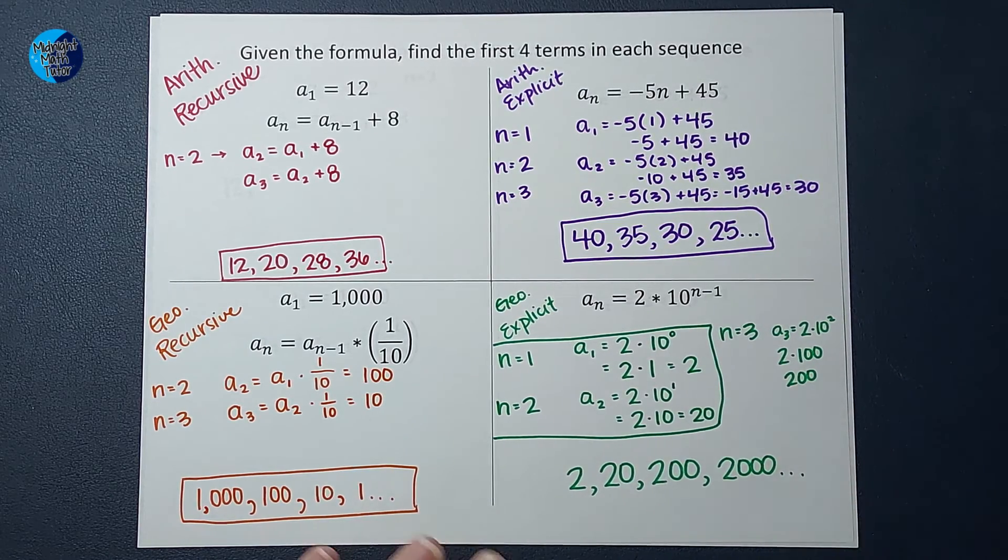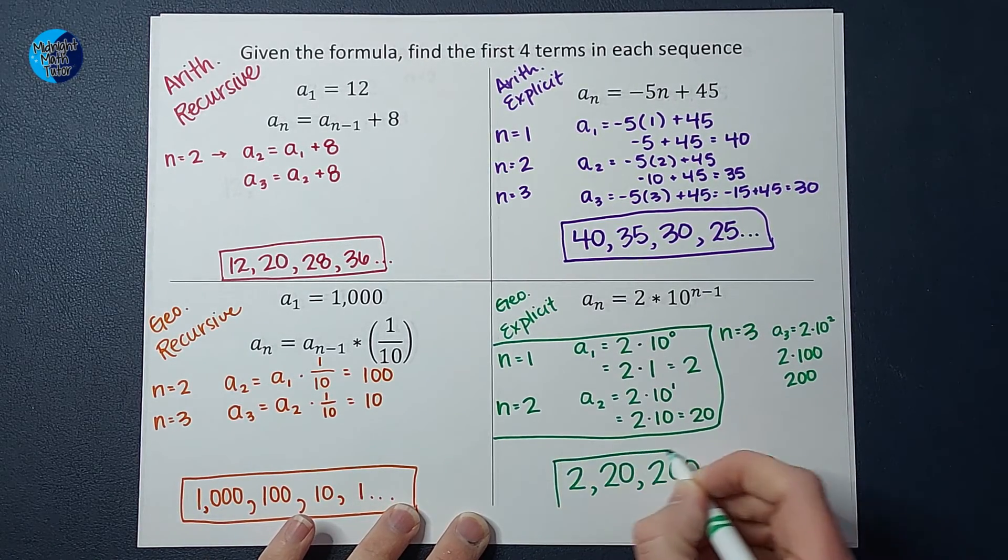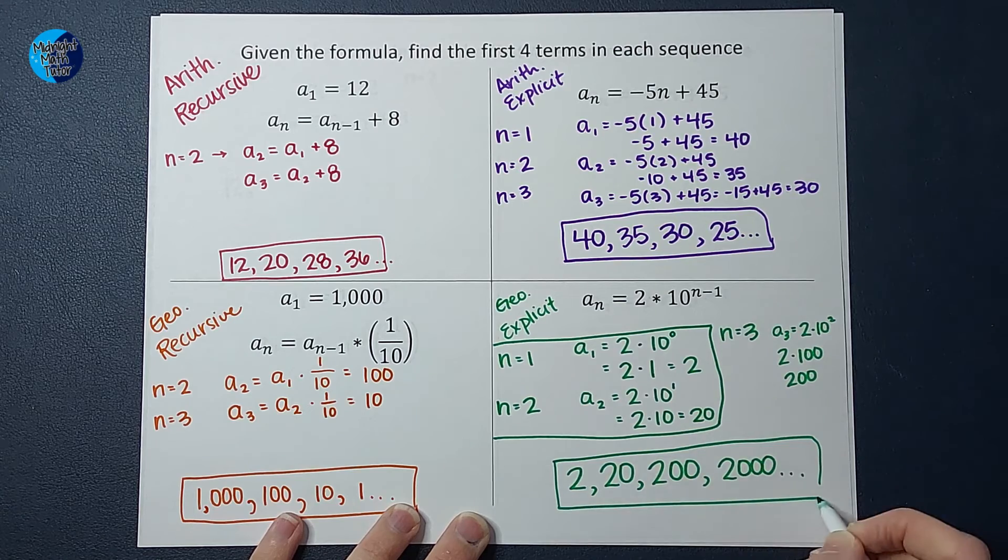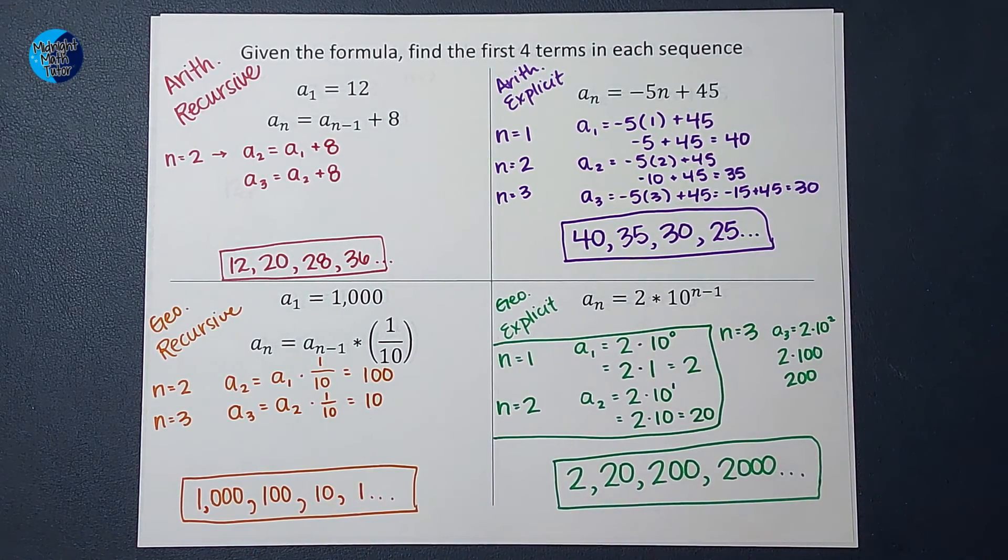And it would keep going, multiplying by 10 each time. Okay, we did it. We went backwards. They gave us the formulas, and we found the sequences. Good job. I'm going to link a whole playlist for you with lots more videos like this. Okay, thanks.